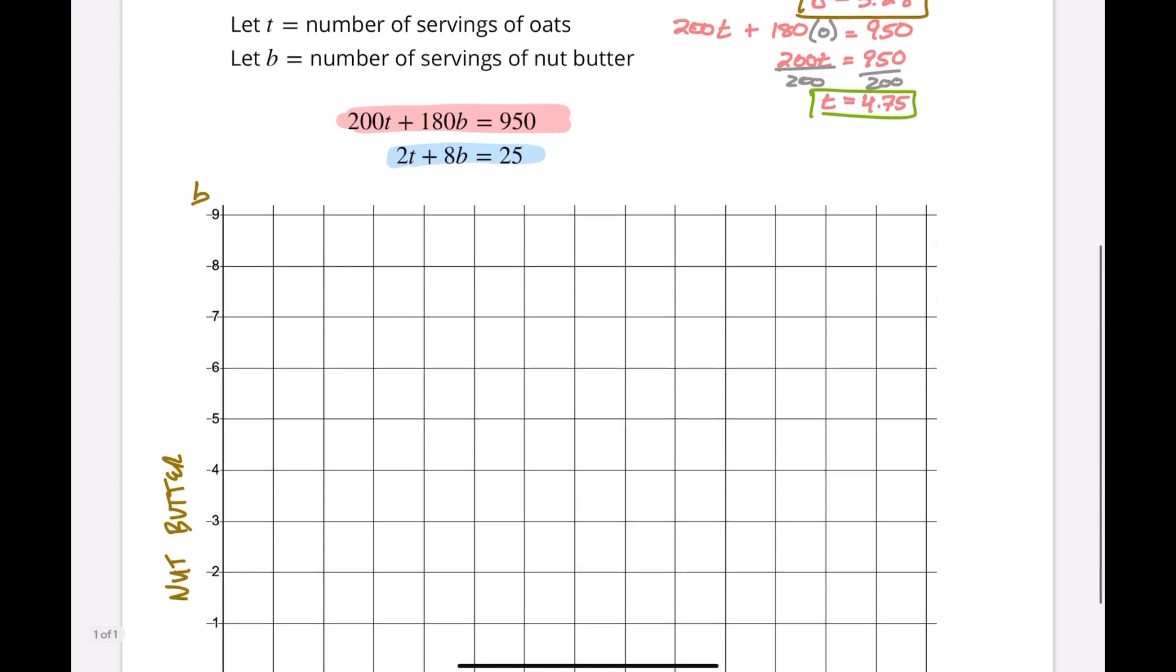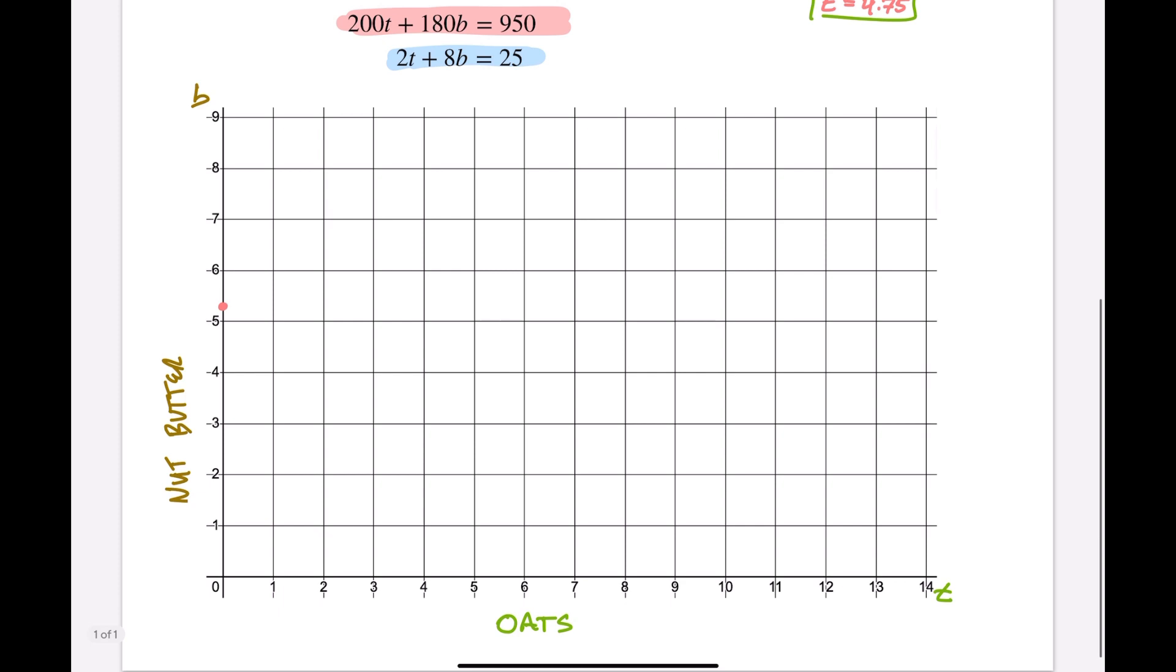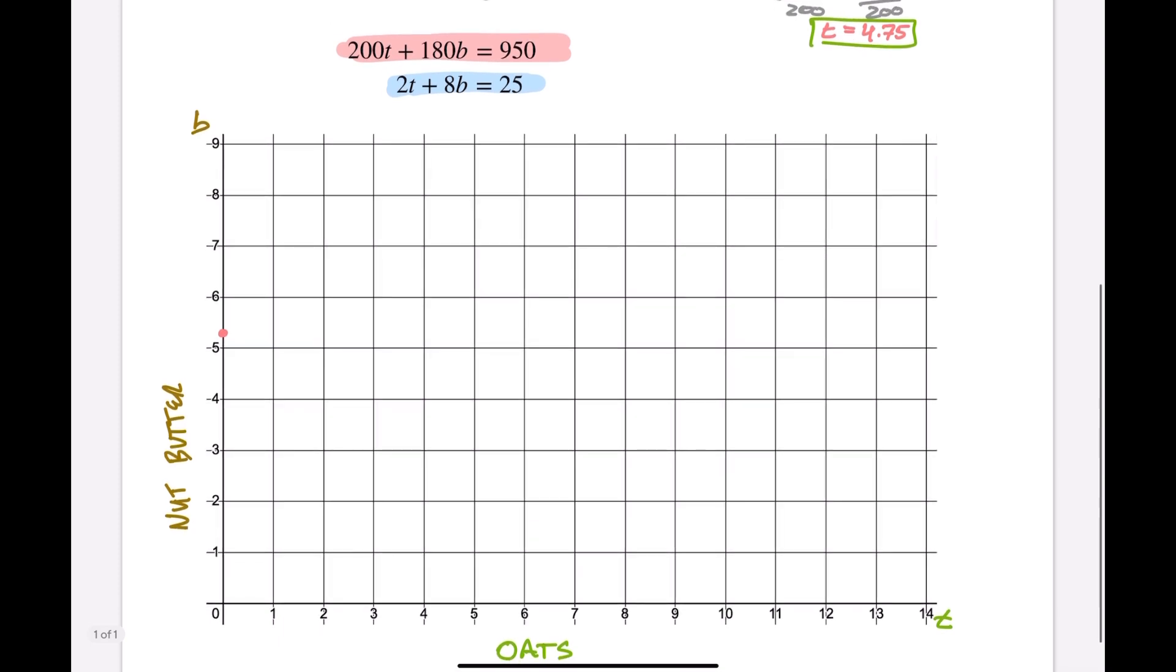So let's graph these two points for our red line. For our nut butter we should be at 5.28, I'm going to find the spot right about there. And then I have to go to 4.75 for my oats, right about there. And hopefully with the magic of technology I can draw a nice straight line. There we go, that looks good.